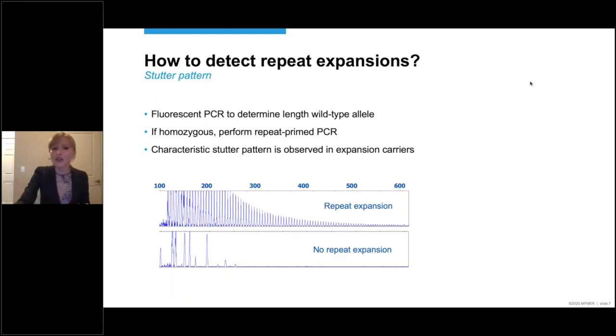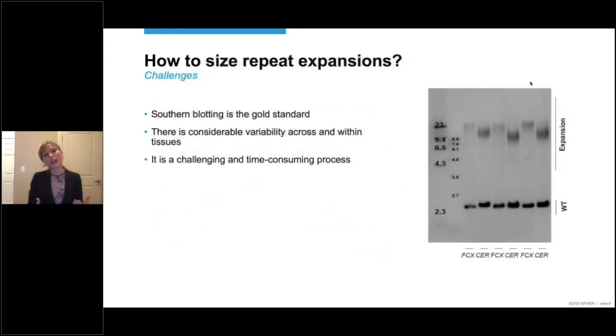If you want to confirm the presence of the C9ORF72 repeat expansion, you should perform a southern blot. And an example here is shown on the right. The southern blot is the gold standard. The top band represents the expansion, and the bottom band, the wild-type allele.